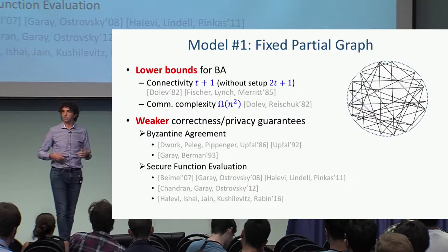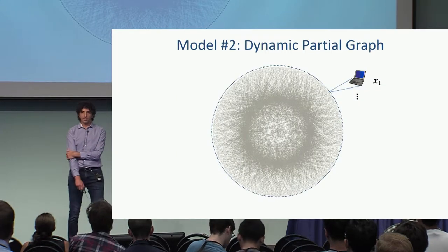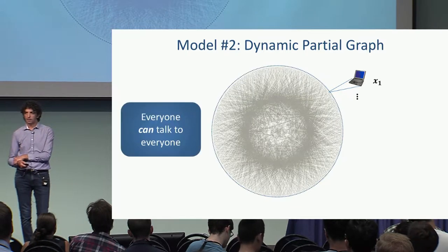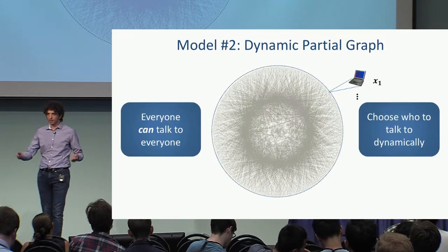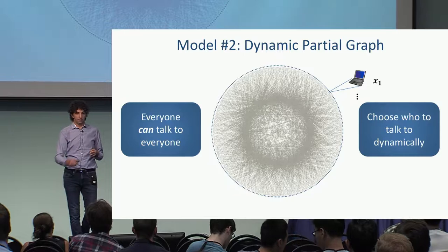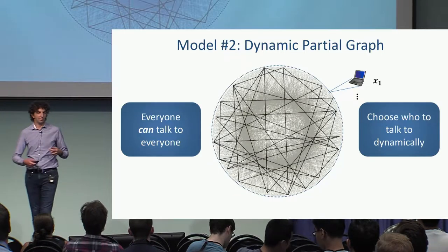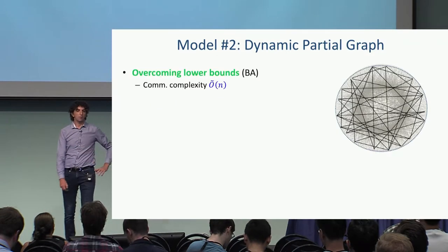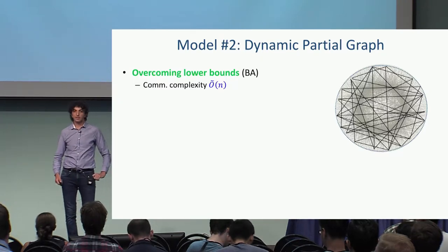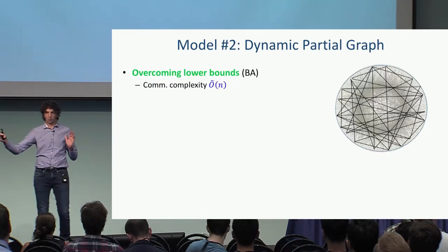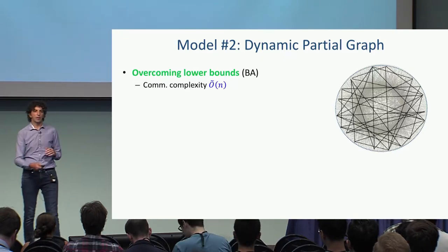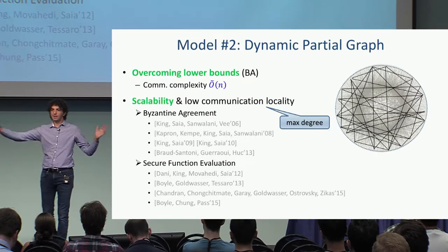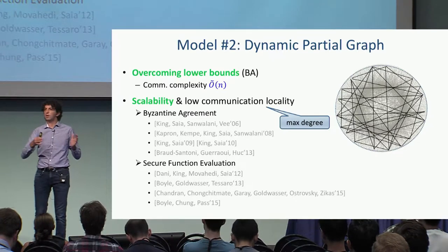Another more recent model is a dynamic graph. In this setting, every party can talk to every other party, but it only chooses who to talk to dynamically during the protocol. This model managed to overcome many of the lower bounds in the fixed graph setting. For example, we know how to have Byzantine agreement with linear communication complexity up to polylog factors, and we have scalable protocols where every party only talks to sub-linear — even polylog — many other parties.